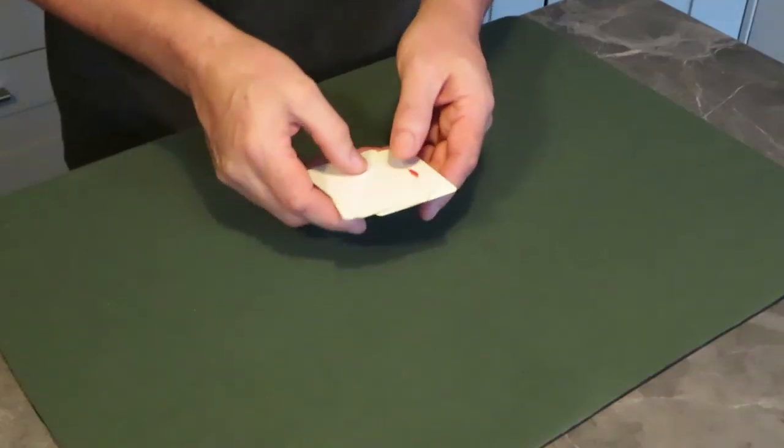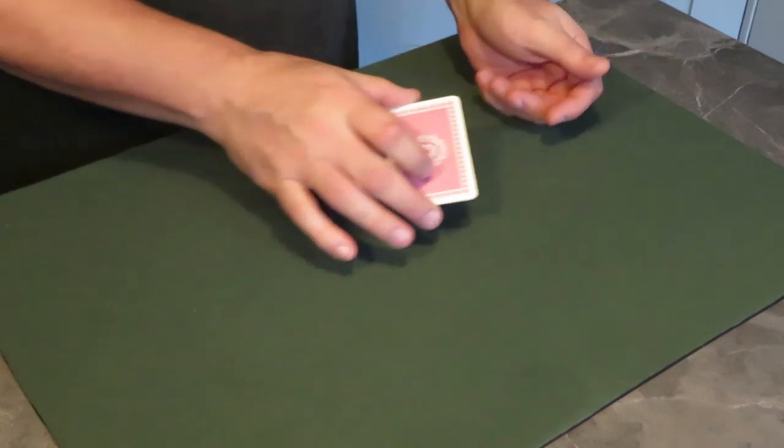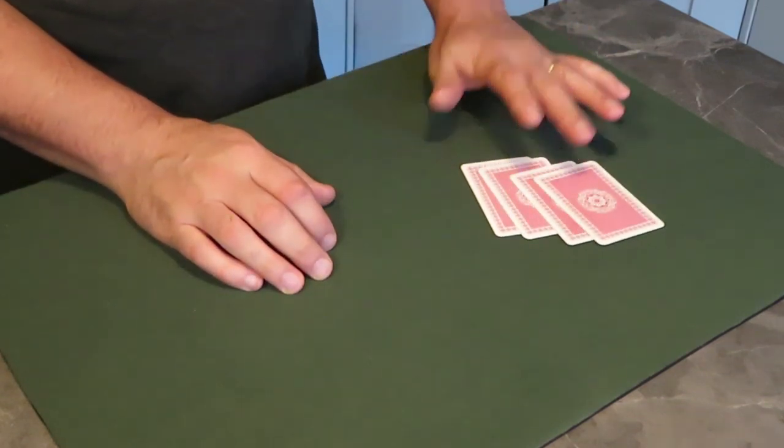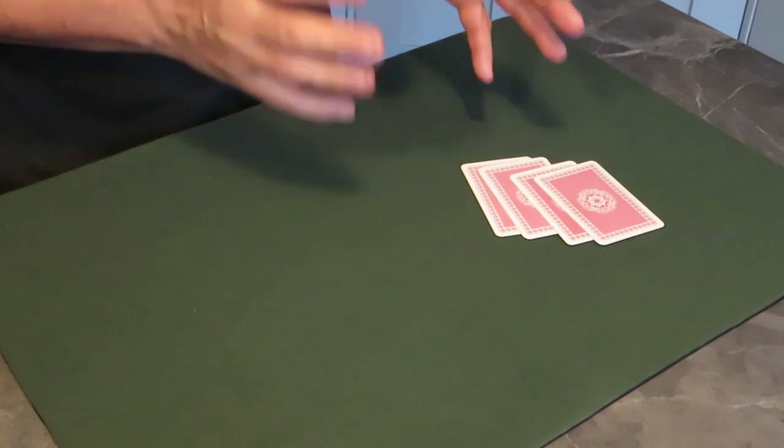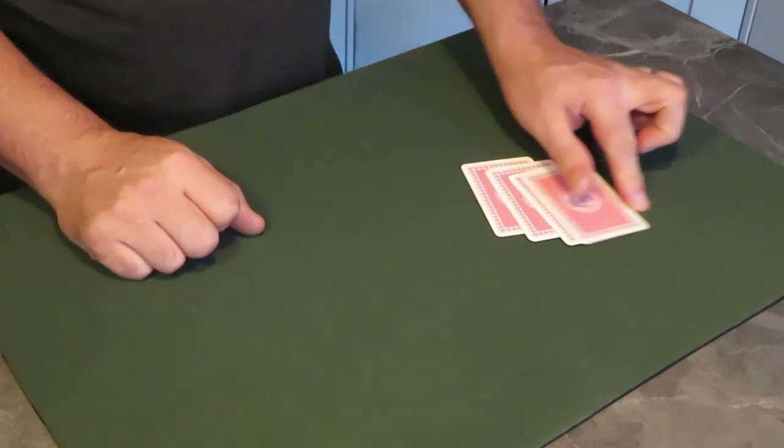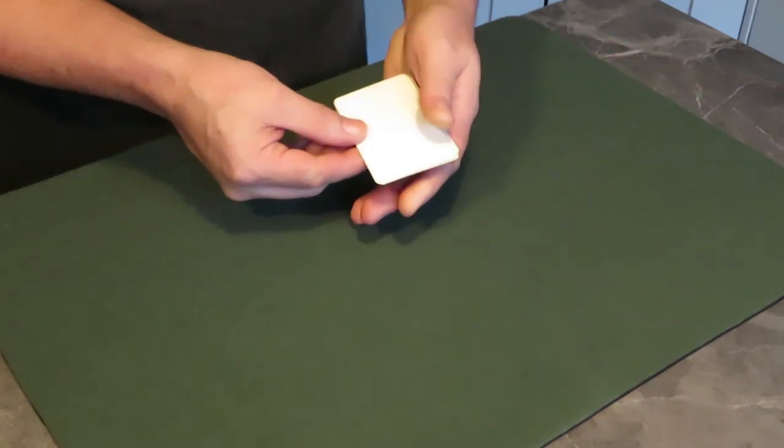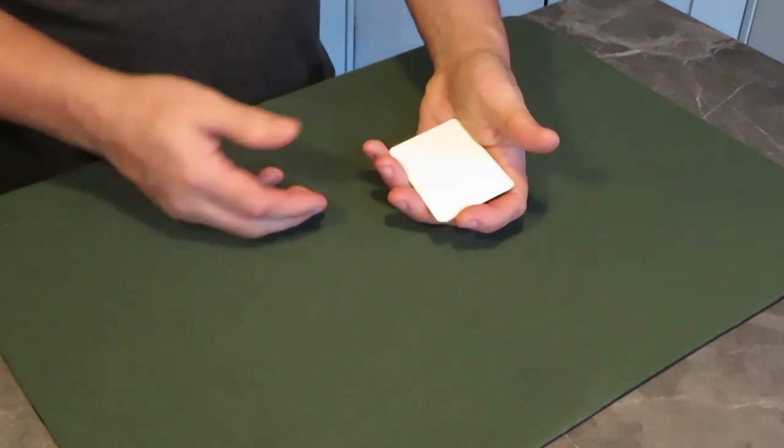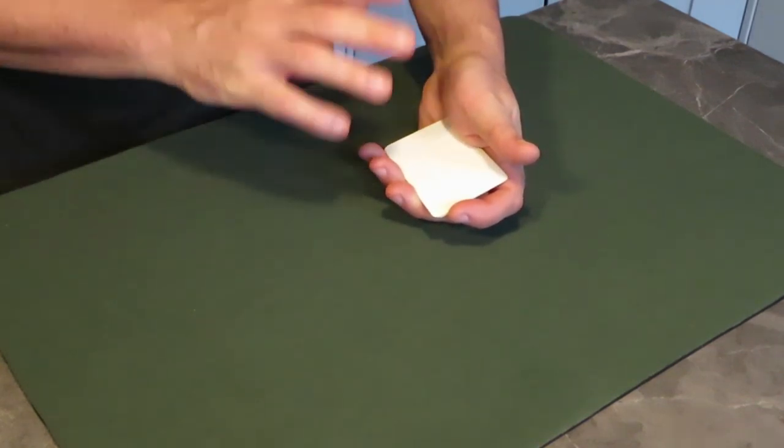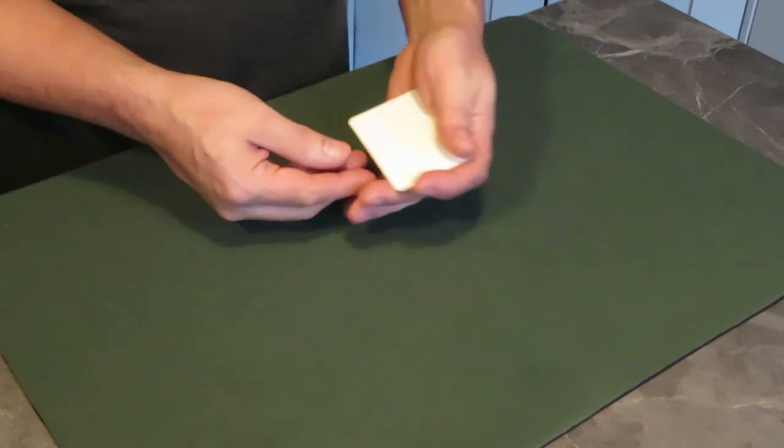So once you've got the cards stacked, you can pull these out of your pocket. There they are, the four cards. You can show them because there are genuinely four cards. When you flip these over, you're going to perform an Elmsley count to make it appear as you've got three blanks and one with a picture on.